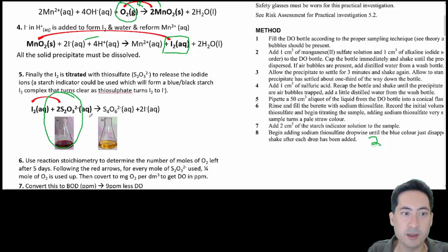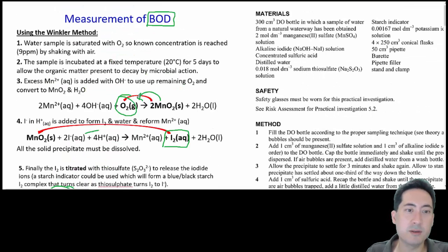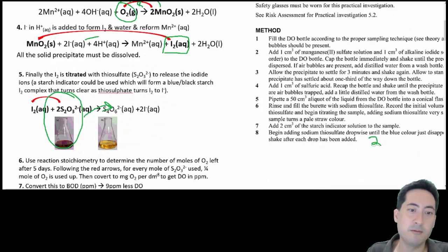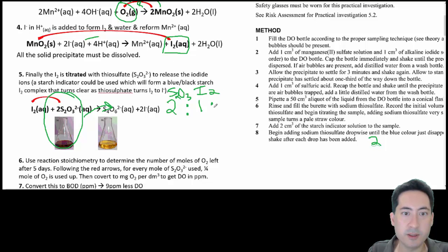Then using thiosulfate we react that out. So what you've got is a mole ratio, you need to be able to do these sort of things in your IB, work through several reactions. What you've got is two moles of thiosulfate is reacting with one mole of iodine which is reacting with one mole of manganese dioxide. I need to reduce these to one, so divide them by two, so that's one and that's a half. And so that's reacting with a half of O2.